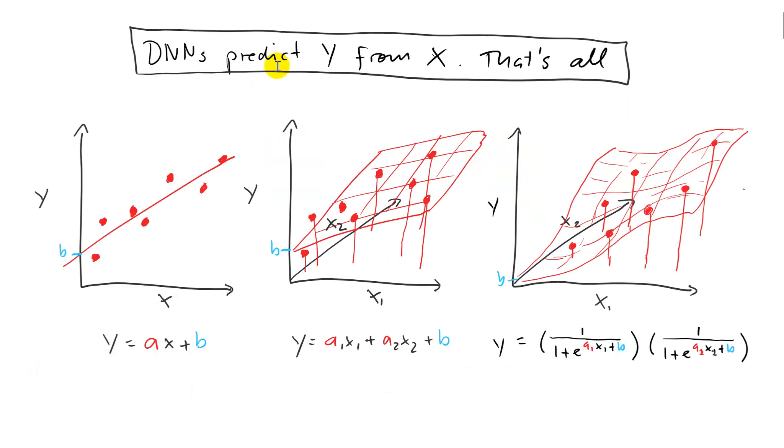So what do deep neural networks do? They predict y from x. That's all. And that's of course something we are very familiar with. If you took my undergraduate class, you know what a linear regression is. We can also do a multiple regression. So in this case, I have two predictor variables for one response variable, and I can also have curvilinear relationships between predictor and response variables. And so whatever DNNs do, it boils down to this functionality.